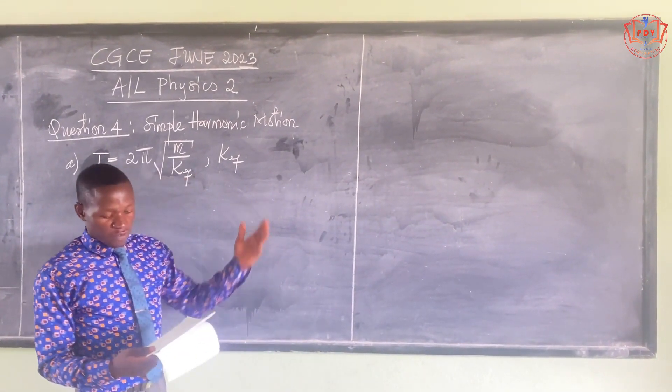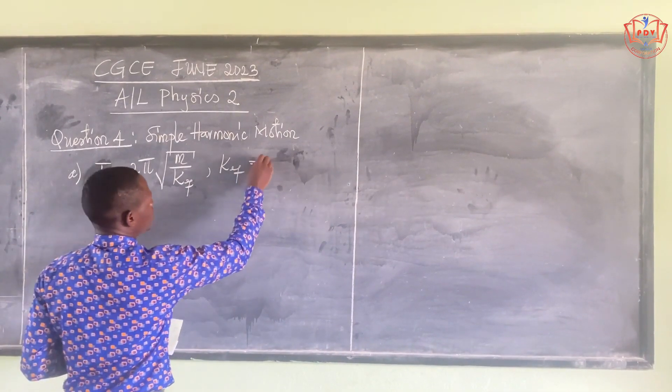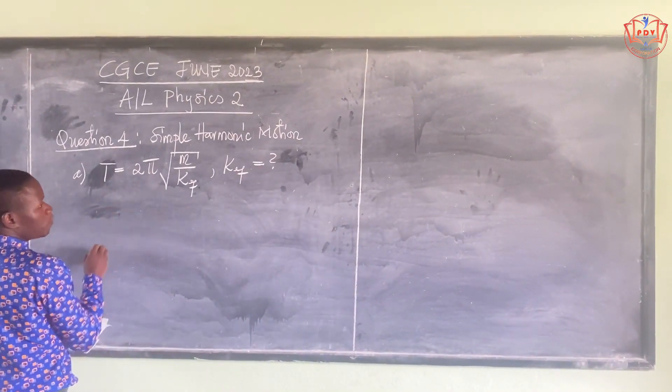The two springs clearly in the figure are in parallel. And what is the expression for k_equivalent when springs are in parallel?